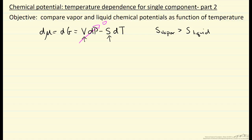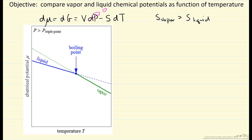Let's look at a plot of chemical potential as a function of temperature over a narrow temperature range. I picked conditions at relatively high pressure, so you'll notice the slopes for the vapor and the liquid are not that different — maybe a factor of two or so — implying the entropies differ by a factor of two or so. The lowest chemical potential at a given temperature is the stable phase, shown by solid lines. At low temperature, liquid is stable; at high temperature, the vapor phase is stable.